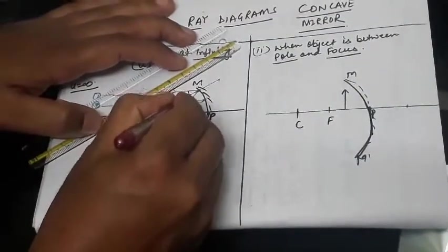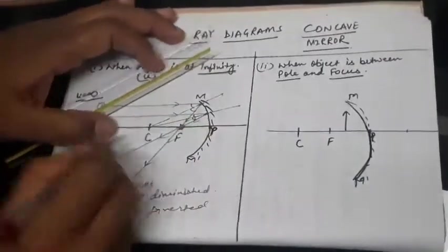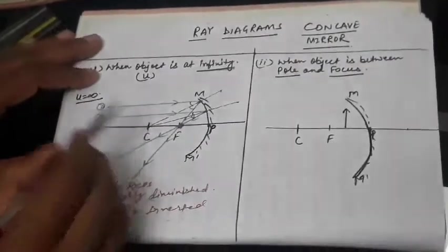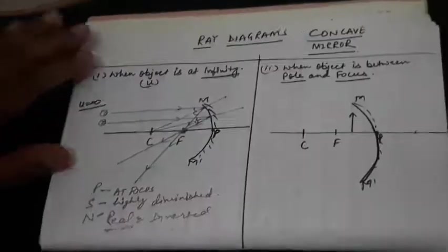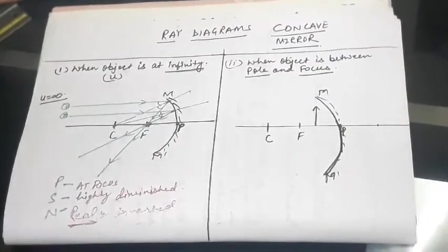Where is angle i and r? C is the normal incidence. Remember, center of curvature, any line which is drawn from center of curvature will be the normal incidence and it is basically normal.